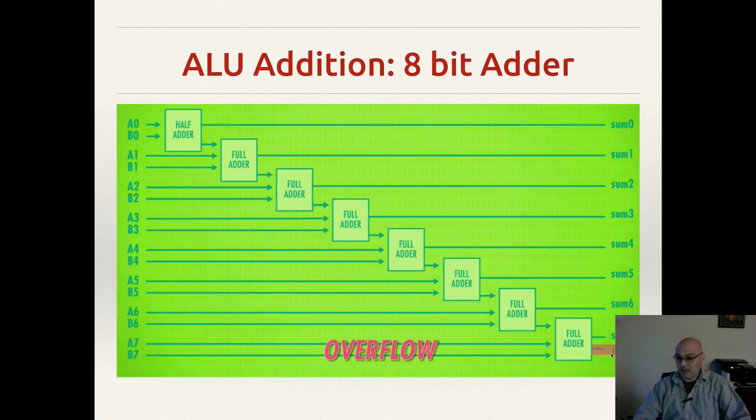Now the last full adder has a carry, but there's no more adders to put it into. This is only an 8-bit adder in this example. Of course, a real computer would have, say, a 64-bit adder or possibly more. But what happens with this carry? Well, remember when we discussed overflow? This is how you determine that. There's actually a flag.